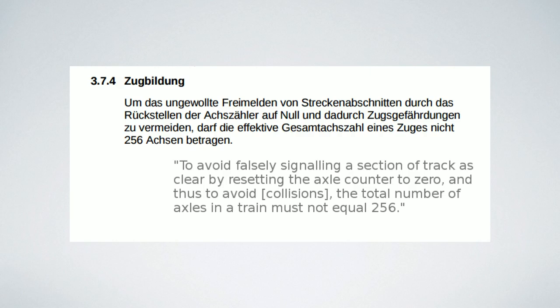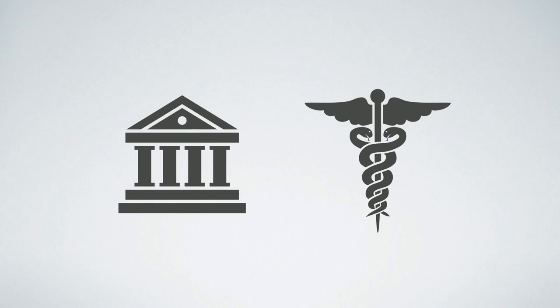I recently came across this bit of info about the train system in Switzerland. To avoid falsely signaling a section of track as clear by resetting the axle counter to zero — and thus avoiding collisions — the total number of axles in a train must not equal 256. Well, that's frightening. With mobile devices growing in popularity in all industries, it is now our responsibility as developers to deliver quality and bug-free software. I would prefer that any software I write doesn't have bugs that cost people their money, or even worse, their lives.